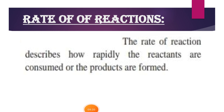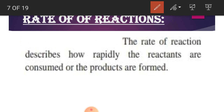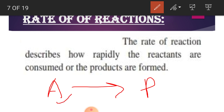Now, what is your rate of reaction? The rate of reaction describes how rapidly the reactants are consumed and the product is formed. Suppose A is your reactant and it has been converted into P. How much time has the reactant required to get converted into the product? This is your rate of reaction.